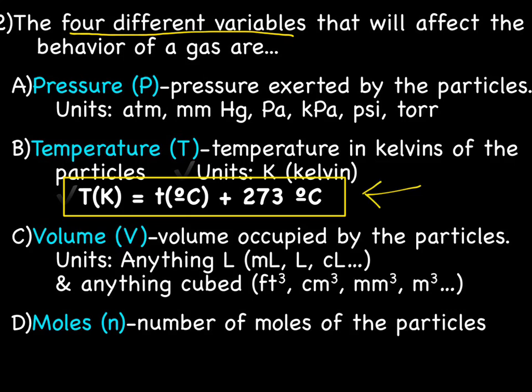The next variable is volume, represented by a capital V — it's the volume occupied by the particles, or the space the particles take up. Volume can be expressed in any kind of liters: liters, milliliters, centiliters, kiloliters. And anything cubed: feet cubed, centimeters cubed, millimeters cubed, meters cubed — anything cubed.